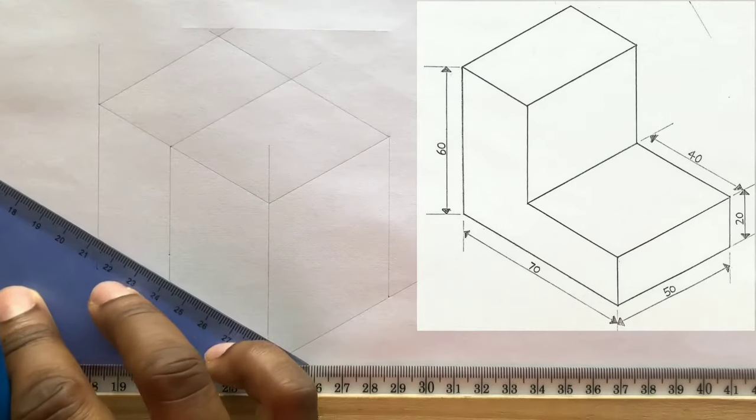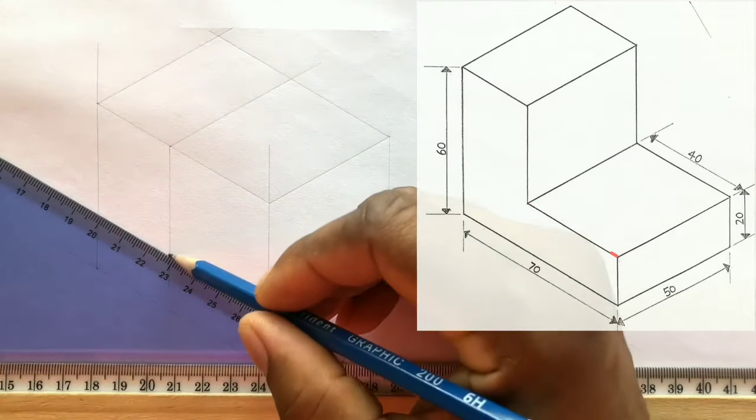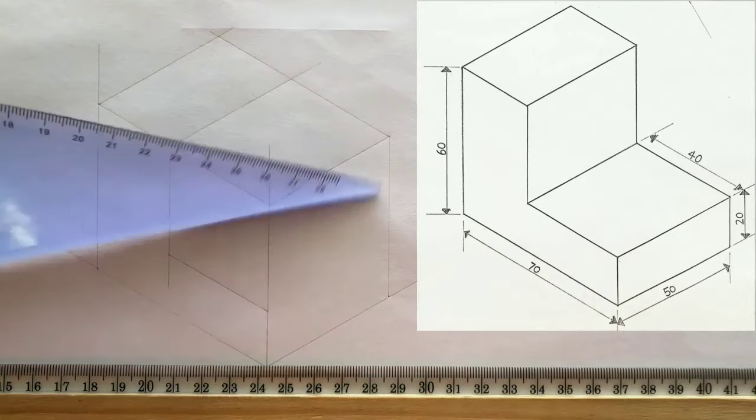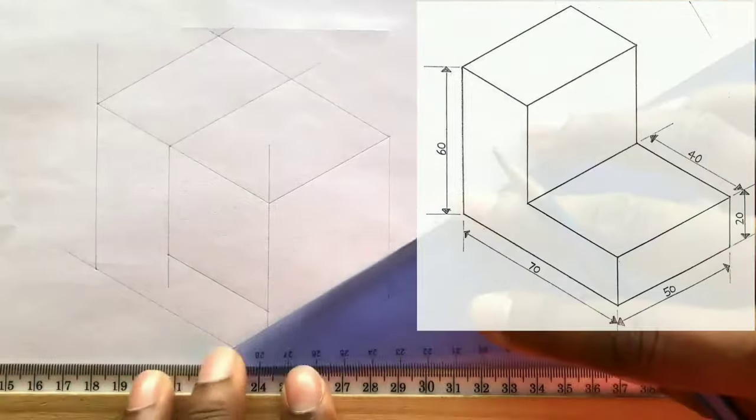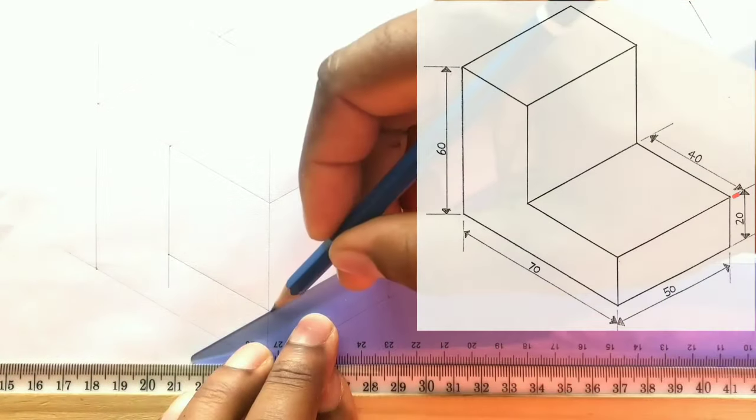Now using your set square and your t-square, you will draw a line from this point. Now from this latest intersection, you will also draw a line using your t-square and your set square.